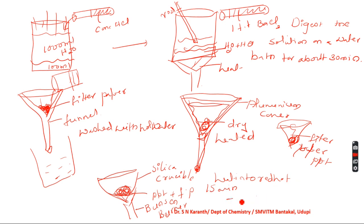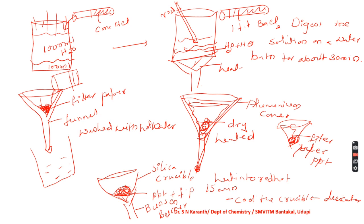Cool the crucible in a desiccator in order to absorb moisture, then weigh the crucible along with the precipitate of barium sulphate and note the weight. Repeat the process of heating, cooling, and drying until a constant weight is obtained.